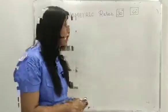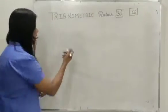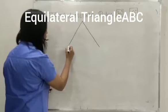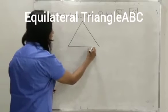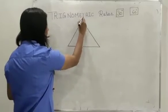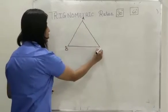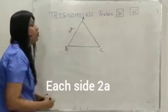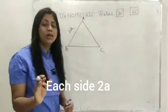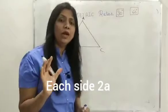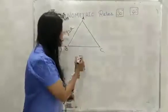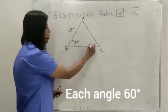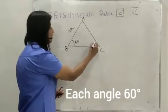First of all, let's draw an equilateral triangle ABC. Suppose this is the equilateral triangle ABC with each side of length 2A. We know that in an equilateral triangle, each angle is 60 degrees.